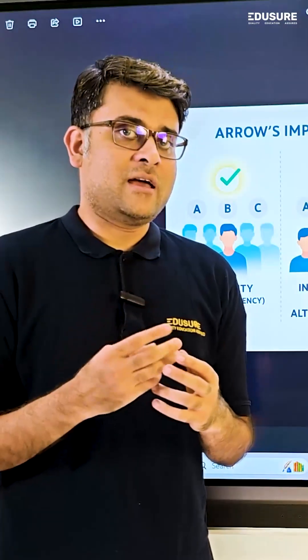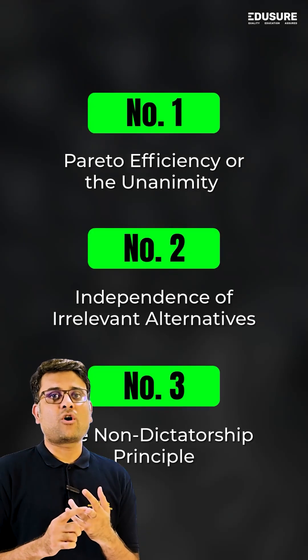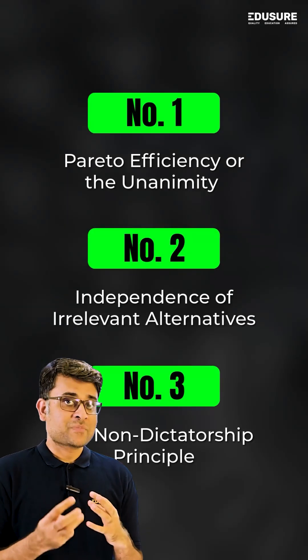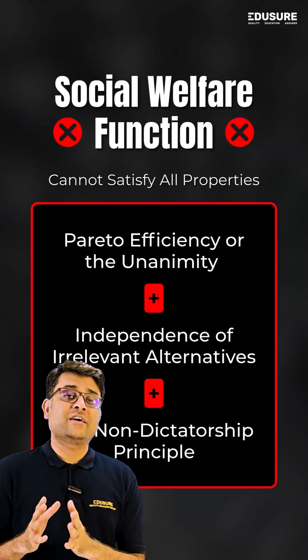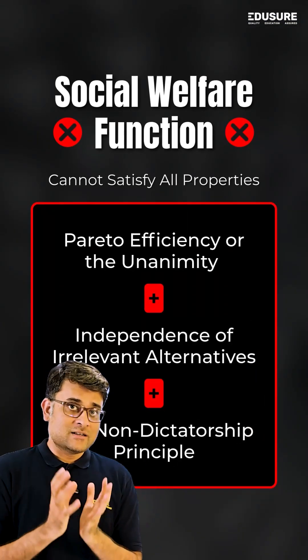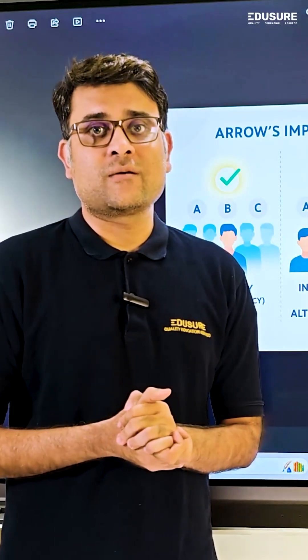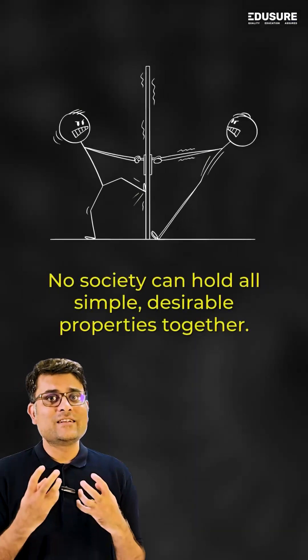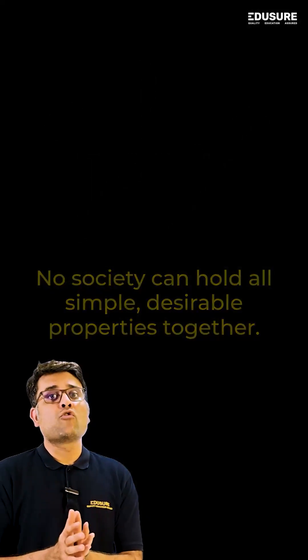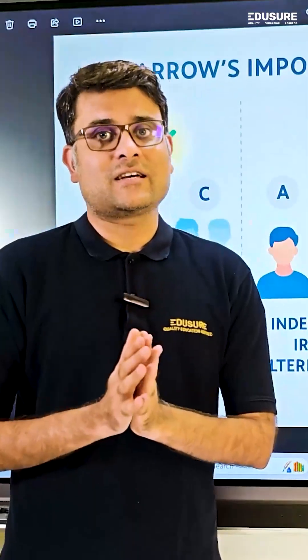So these three are P, I, N — PIN: Pareto Efficiency, Independence of Irrelevant Alternatives, and Non-Dictatorship. These three properties, no social welfare function can satisfy together. This is Arrow's Impossibility Theorem. It is quite surprising that such desirable and simple properties cannot all hold simultaneously in any society.